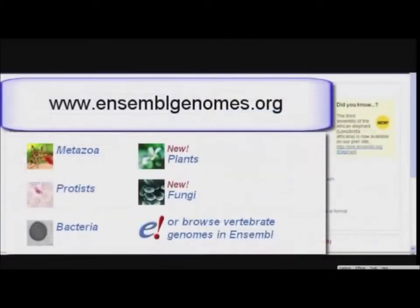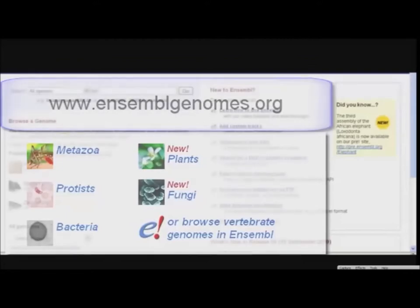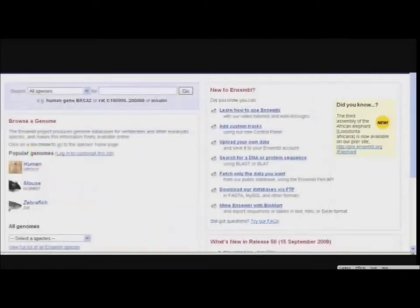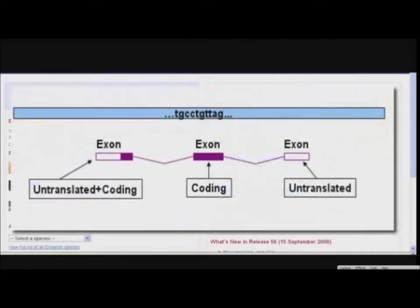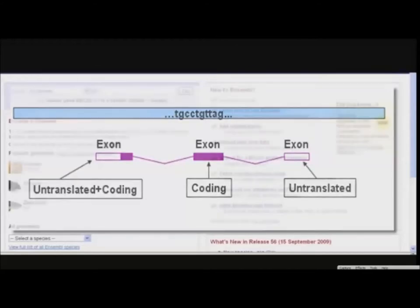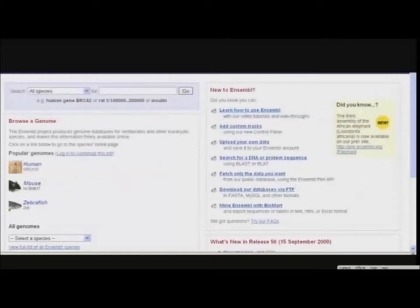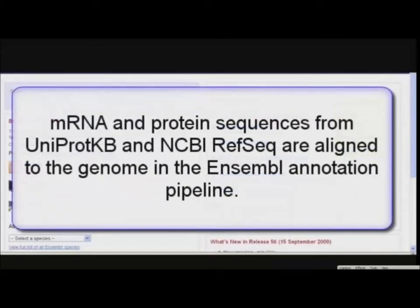Ensembl analysis is now extended to bacteria, plants, produce, and fungi. See our sister project, Ensembl Genomes, for more. What are Ensembl genes? In the gene build, cDNA and protein sequences from sources such as NCBI Reference Sequence Set and Uniprot are aligned to the genome. From these alignments, transcripts are clustered together based on overlapping coding sequence to form Ensembl genes. This is the automatic annotation pipeline.